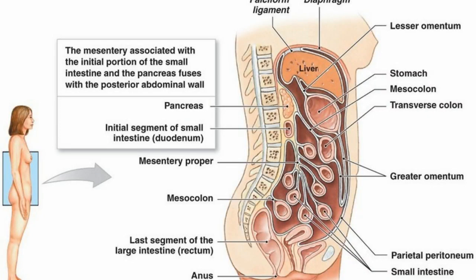The small intestine is made up of three parts including duodenum, jejunum, and delium. Duodenum is the first part, followed by jejunum and delium.